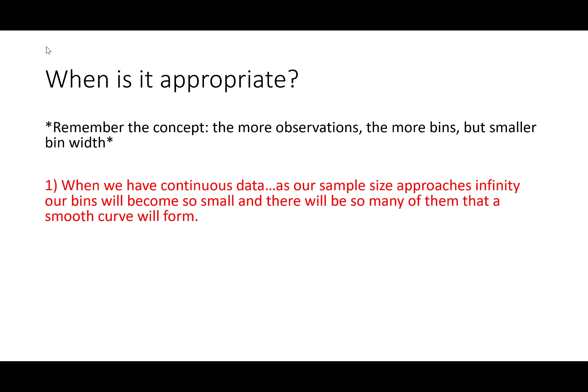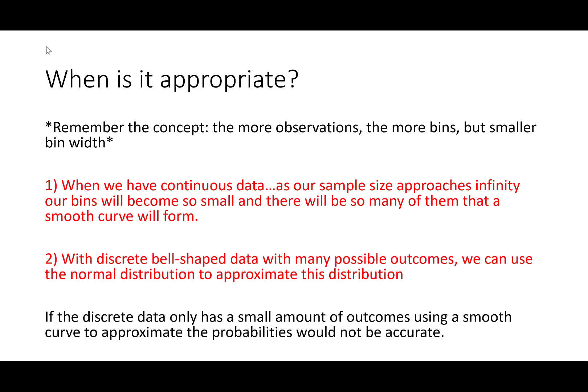If we have a discrete data set that has many possible outcomes and roughly follows this normal distribution shape, then we can use this continuous distribution to approximate it. However, if your discrete variable only has a couple of outcomes and follows a general bell shape, that does not mean we should use a normal distribution to approximate those probabilities and percentages.